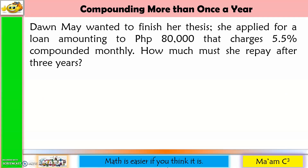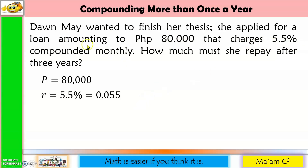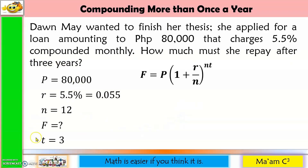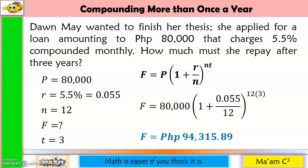Let us answer this problem. She applied for a loan amounting to 80,000 — this is our P. 5.5% converted to decimal is 0.055, which is our rate. Compounded monthly, so N is 12. We are looking for how much she must repay after 3 years, so T is 3. Substituting these values into the formula gives us 94,315 pesos and 89 centavos.